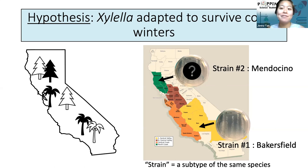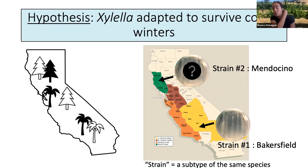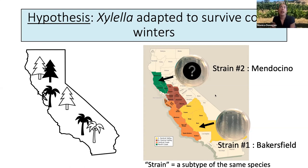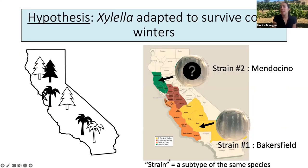Sarah asks: can vines develop an immune response over time? Yes — different grapevine varieties like Merlot and Pinot Noir differ in their ability to mount an immune response against this pathogen. Because vines are often cloned to start new vineyards, the plants themselves aren't evolving, but different varieties may have different immune responses to this pathogen.